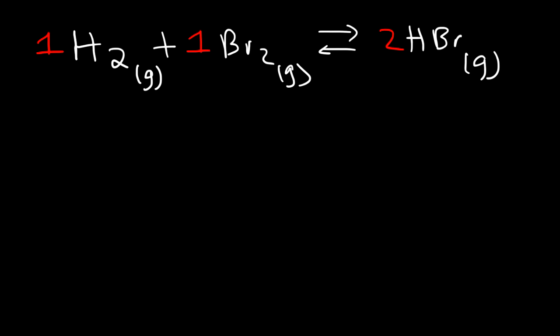Now let's consider another example. Hydrogen gas reacts with bromine to produce hydrobromic acid. So everything is in a gas phase. And the coefficients for the balanced chemical reaction are 1, 1, and 2. So feel free to pause the video and go ahead and take a minute to write the equilibrium expression for this reaction.